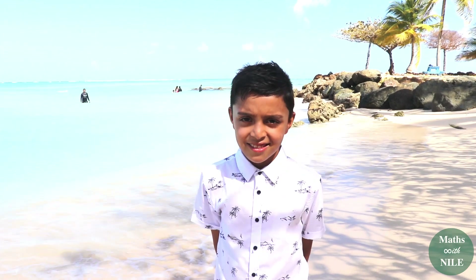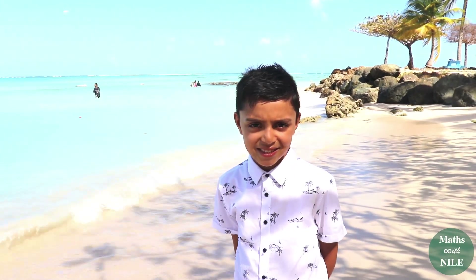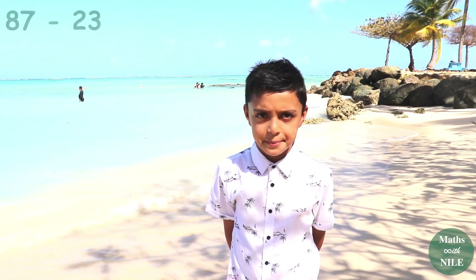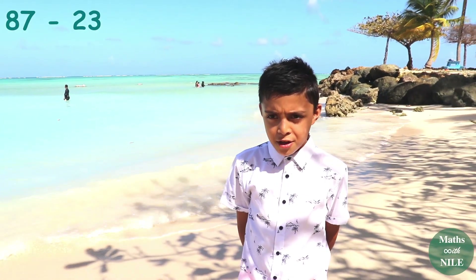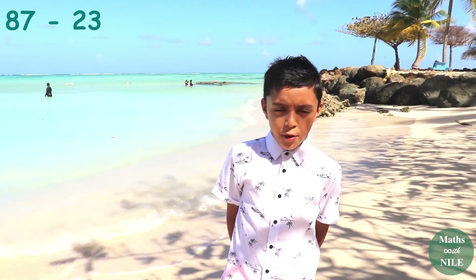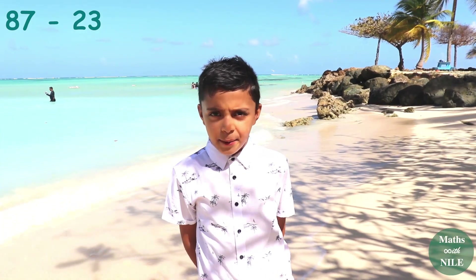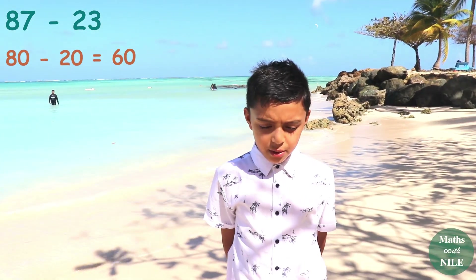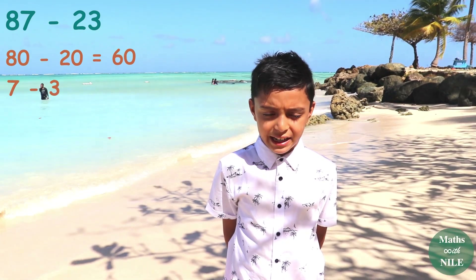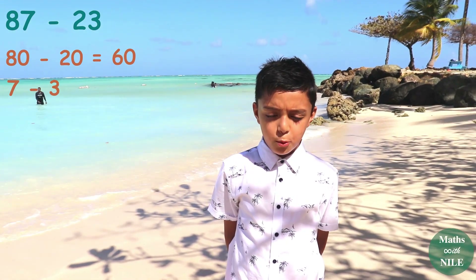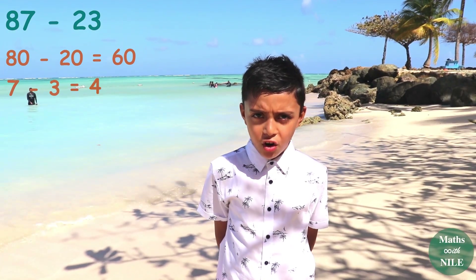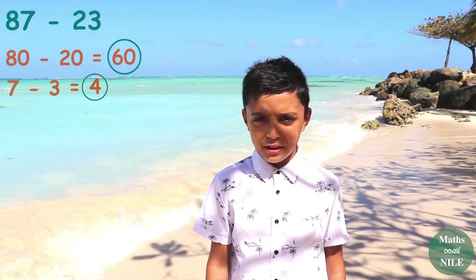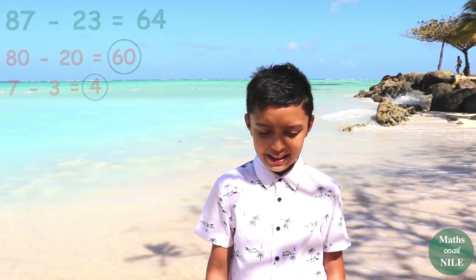Now let's do one more subtraction question. Can we do 87 take away 23? So we do 80 take away 20, which is 60. And then we do 7 take away 3, which is 4. So we do 60 plus 4, so the answer is 64. Good job, Niall.